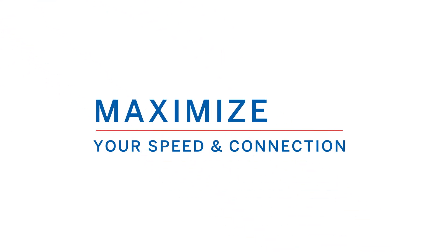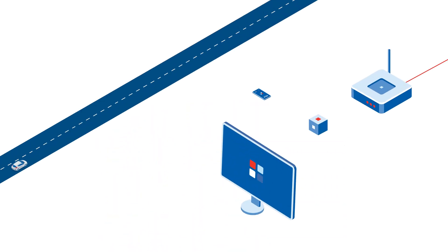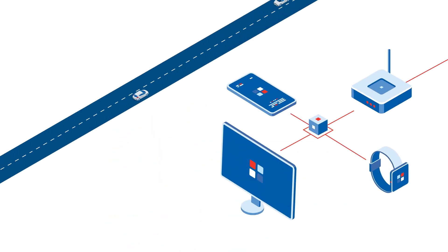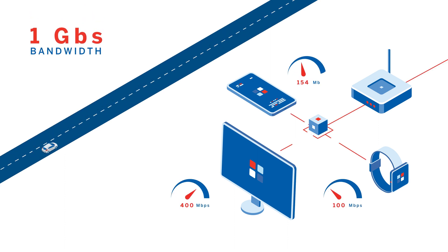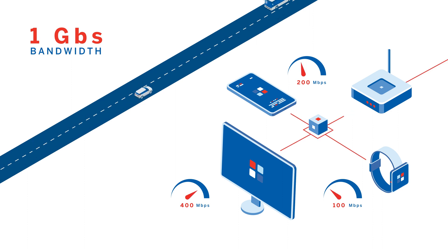Here are some important things to remember if you want to maximize your internet speed and connection. Your internet speed cannot exceed your bandwidth. Unlike driving on the highway, data can't travel faster than the speed limit. If your plan offers one gig of bandwidth, it is unlikely a single device will reach that speed, because the bandwidth is being shared by multiple devices.